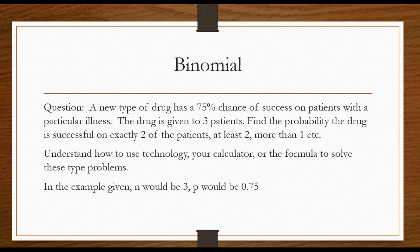Binomial, a typical type of binomial question. A new type of drug has a 75% chance of success on patients with a particular illness. The drug is given to three patients. Find the probability the drug is successful on exactly two of the patients.